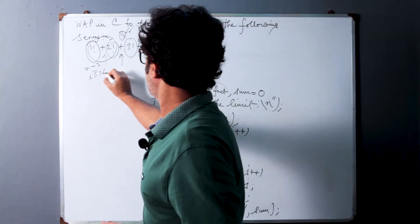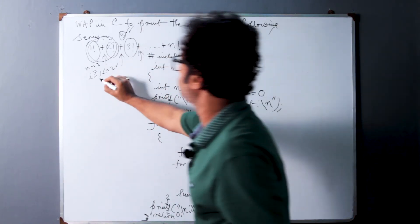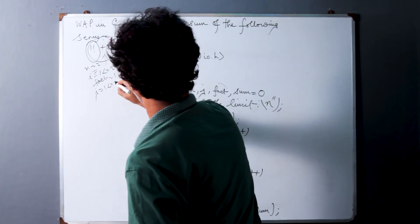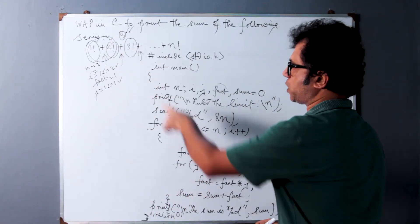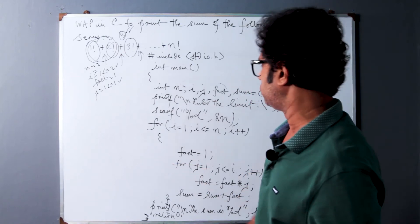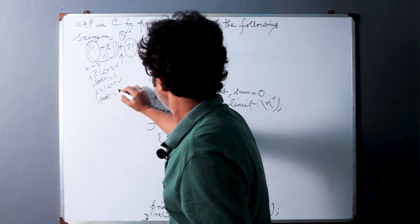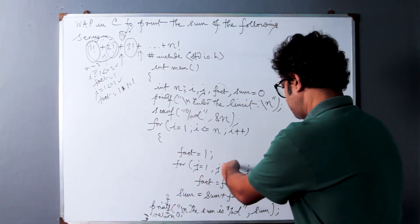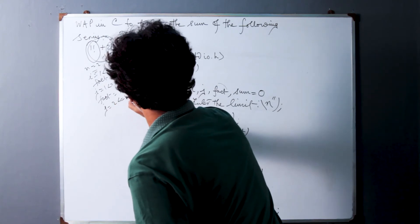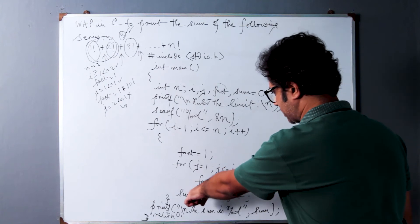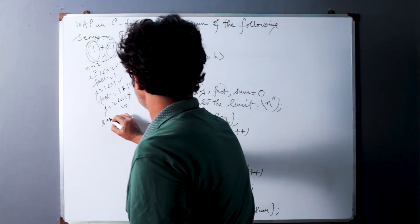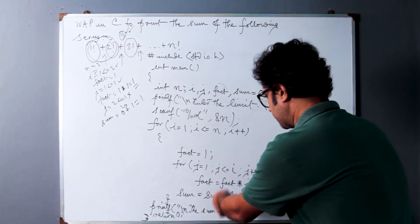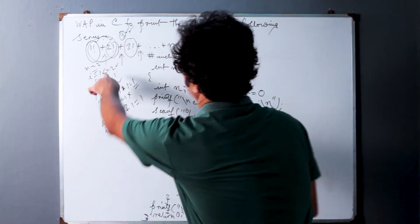i equal to 1, clearly less than or equal to 2 — condition satisfied. Fact is initialized to 1. We come to the inner loop: j equal to 1, j less than or equal to i — condition satisfied since both are 1. We enter the inner loop and calculate fact as fact star j, that is 1 star 1 equals 1. We increment j to 2, which is not less than or equal to 1 — condition breaks. We come out of the inner loop. Sum equals sum plus fact: 0 plus 1 gives sum equal to 1. Now i is incremented to 2.